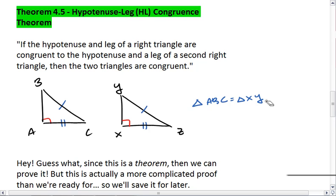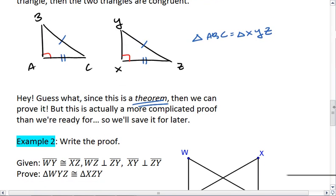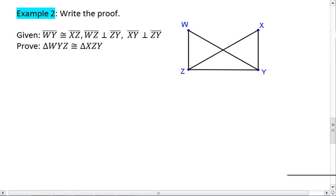And notice, it doesn't matter which leg is congruent. We just need the hypotenuse and one leg. Now, I've already mentioned this, but since it is a theorem, we can prove it. But this is actually a more complicated proof than we're ready for, so we'll save it for later. However, you can use this theorem to construct other proofs.